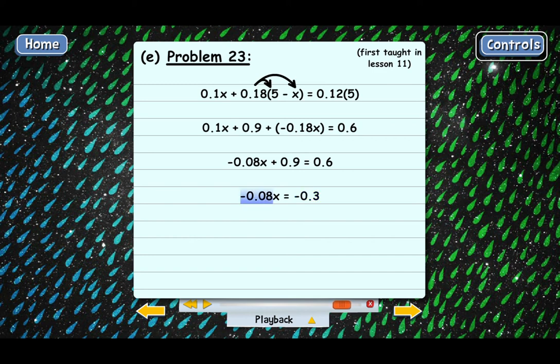And then the last undoing step is to divide both sides by negative 0.08, which gives us X equals 3.75. And that means that there are 3.75 pounds in the bowl containing the 10% sludge. So the answer to problem 23 is 3.75 pounds.